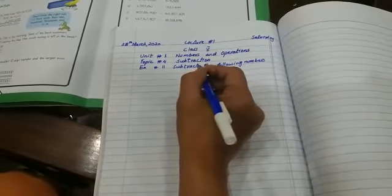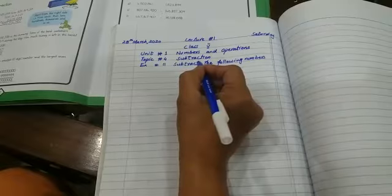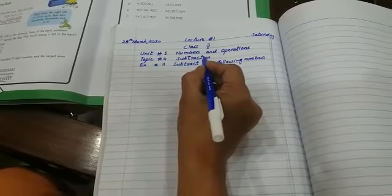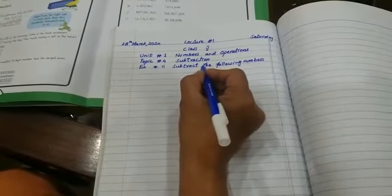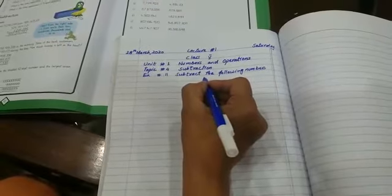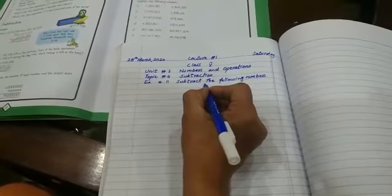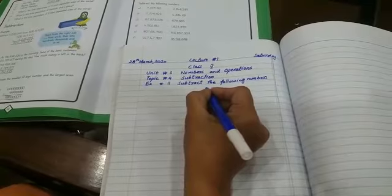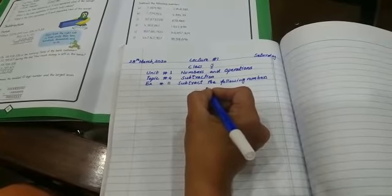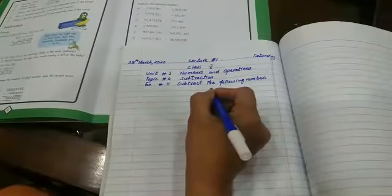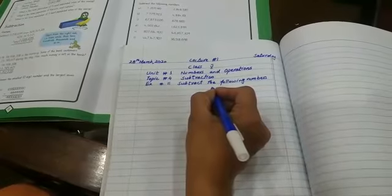Assalamu alaikum, Class 5. We have started Number 1: Numbers and Operation. We have already done exercises 1 to 10. Now we are solving Exercise 11, which topic is subtract the following numbers, our new topic.